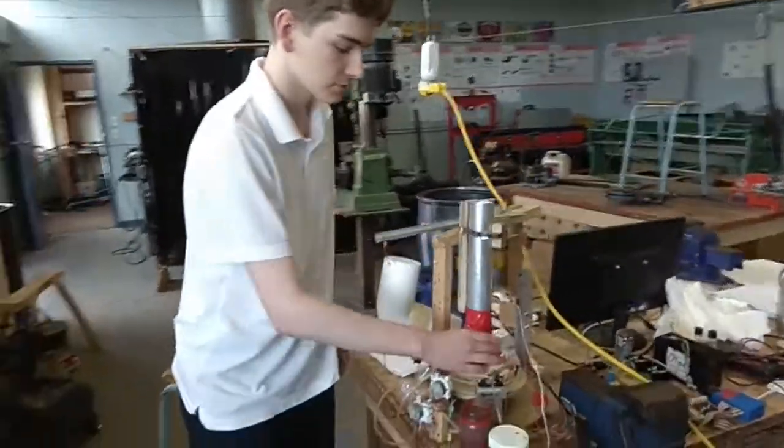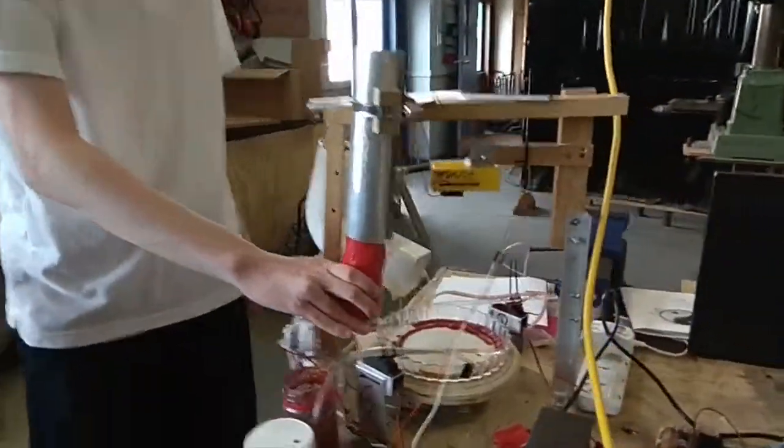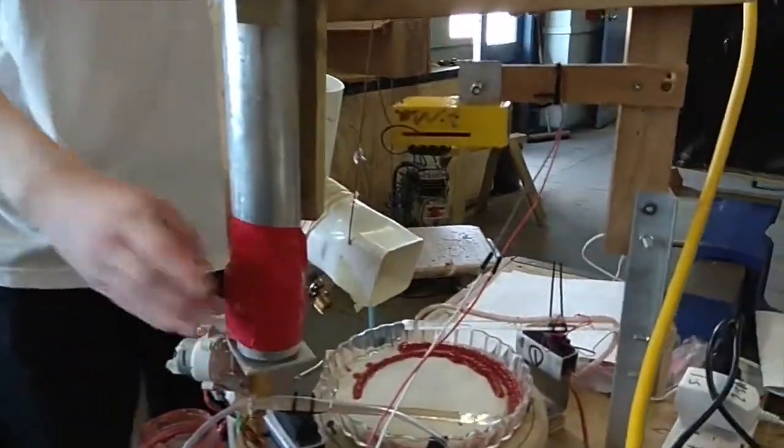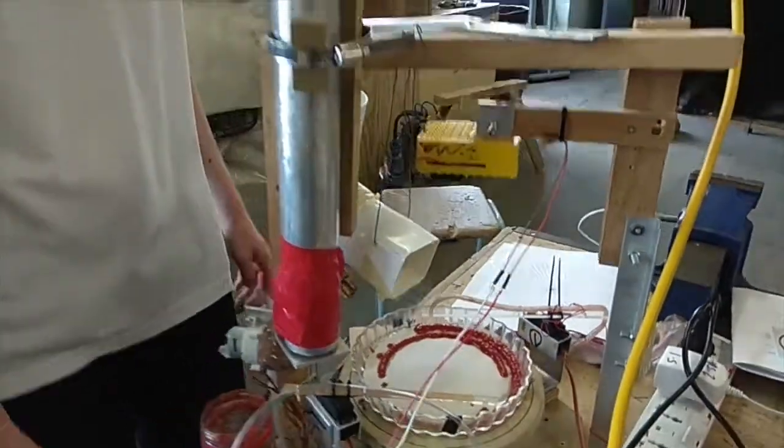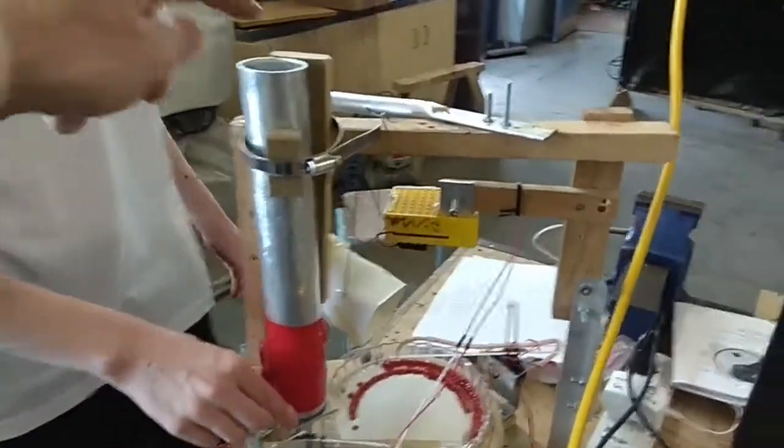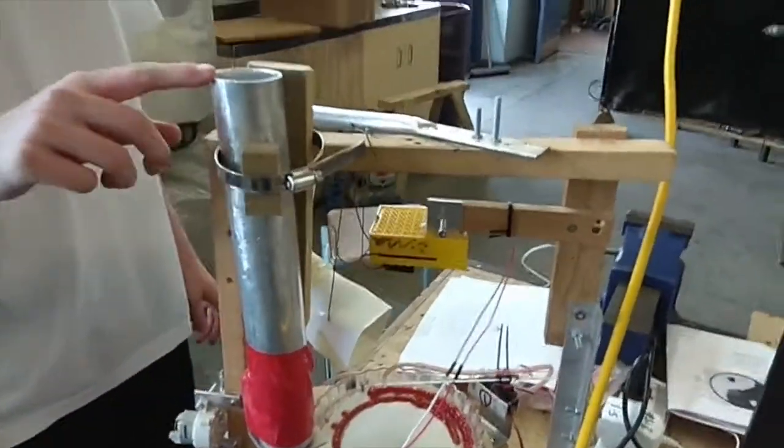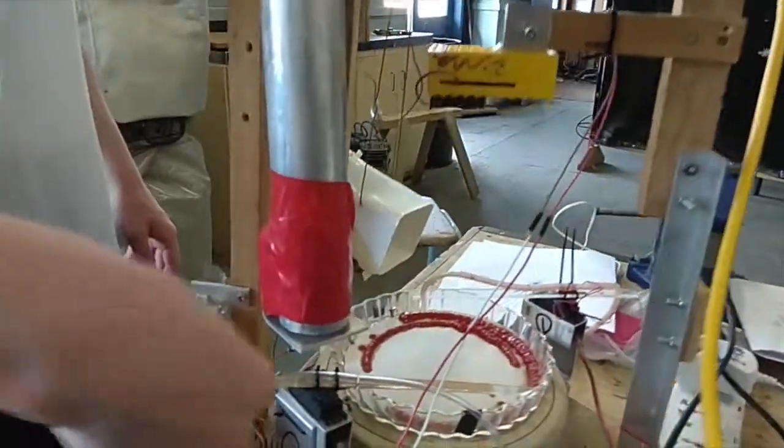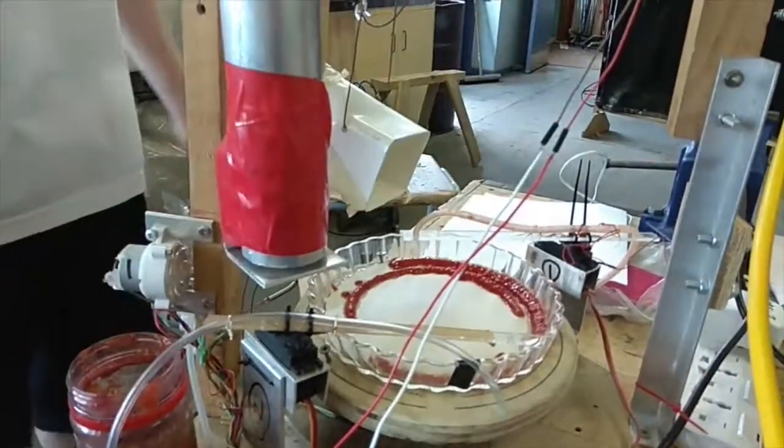And also what we have here in the works is our salami dispenser. So like, no pizza would be complete without salami. So the salami goes in the top? Sliced salami goes in the top? Yeah, slices of salami go into the top and then the arm will just flip them out and onto the pizza.